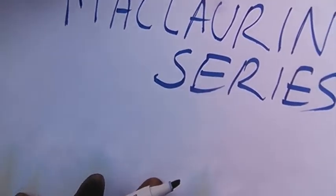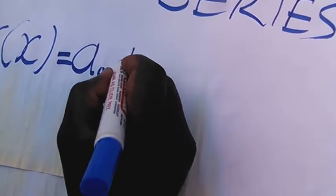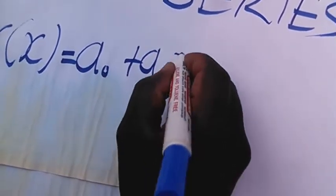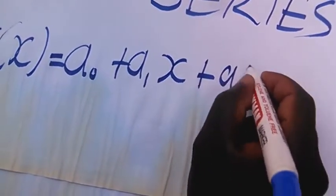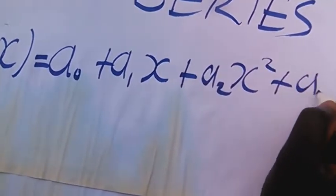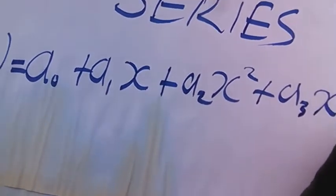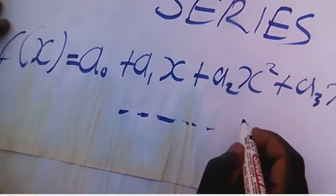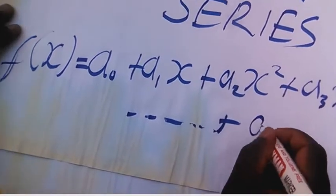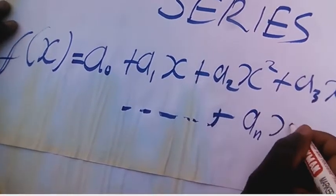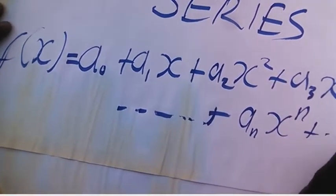We are going to assume a function which is in series in ascending powers of x. That is, f(x) will be equal to A0 plus A1x plus A2x squared plus A3x cubed, up to the nth term, which is Anx to the power n, up to infinity.